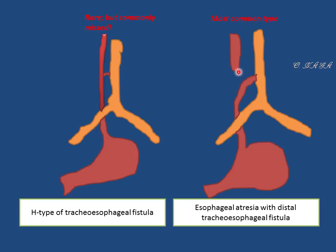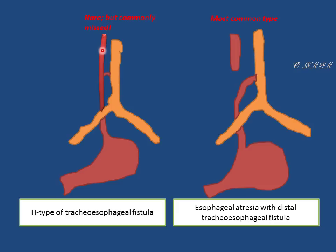The most common type shows a blind esophagus not connected distally; the NG tube will coil and return back, failing to reach the stomach. The distal esophagus is connected to the trachea via the TEF. The rare H-type — named because it looks like the letter H — is a small fistula between the esophagus and trachea with no interruption; you can pass the NG tube normally. Patients present later with recurrent cough, wheezing, and pneumonia from aspiration.